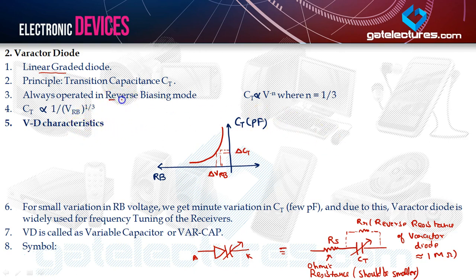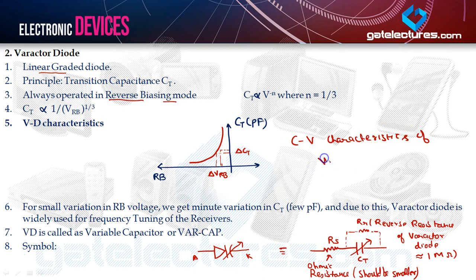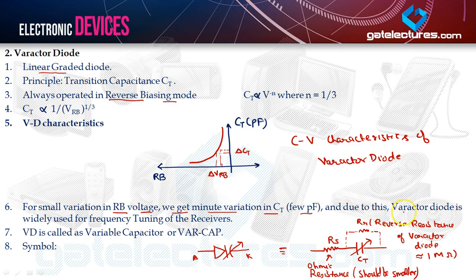It is always operated in the reverse biasing mode. The CV characteristics — capacitance-voltage characteristics — show that with a change in reverse bias voltage, the transition capacitance also changes. For a small variation in reverse bias voltage, we get a minute variation in transition capacitance of a few picofarads. Due to this, the varactor diode is widely used for frequency tuning of receivers. The varactor diode is also called a variable capacitor or var cap.